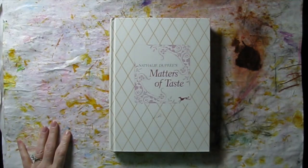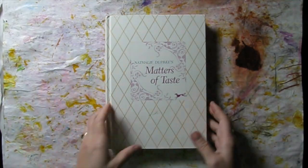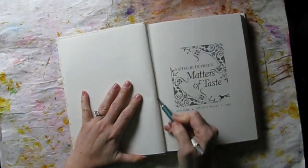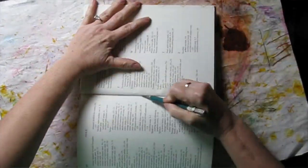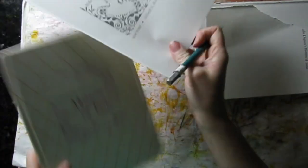Start with a book. Hardback, paperback, doesn't matter in this case. I've got an old cookbook here that I'm going to use. You want to start by disemboweling your book. If it's a paperback, just cut the covers off. I can repurpose that, so I'm going to set that aside.